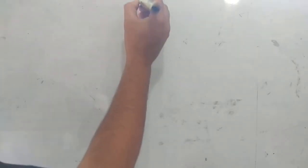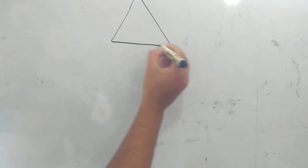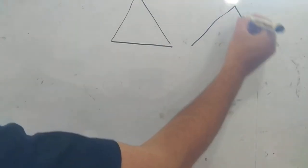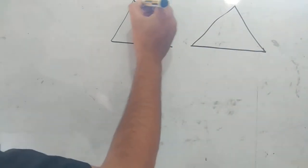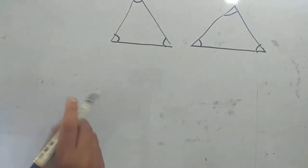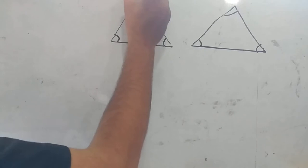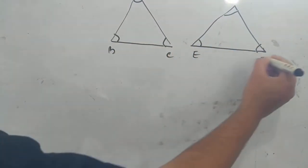Asalaamu alaikum dear students. Last lecture, we studied a theorem: the ratio of the areas of two similar triangles. We have two similar triangles — suppose triangle ABC is similar to triangle DEF. When two triangles are similar, their corresponding angles are equal and their corresponding sides are proportional. Looking at the theorem, we have proved that suppose triangle ABC is similar to triangle DEF.